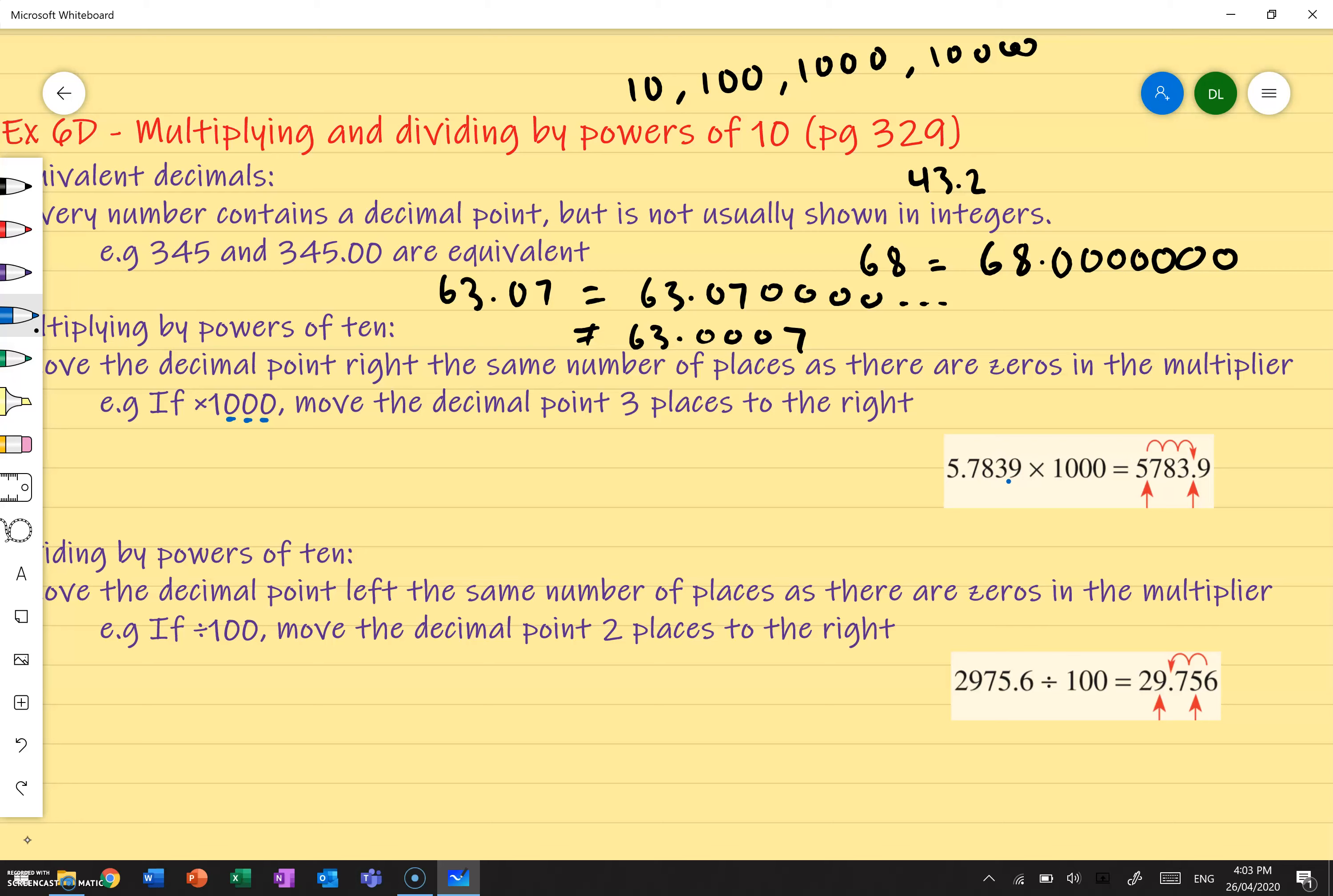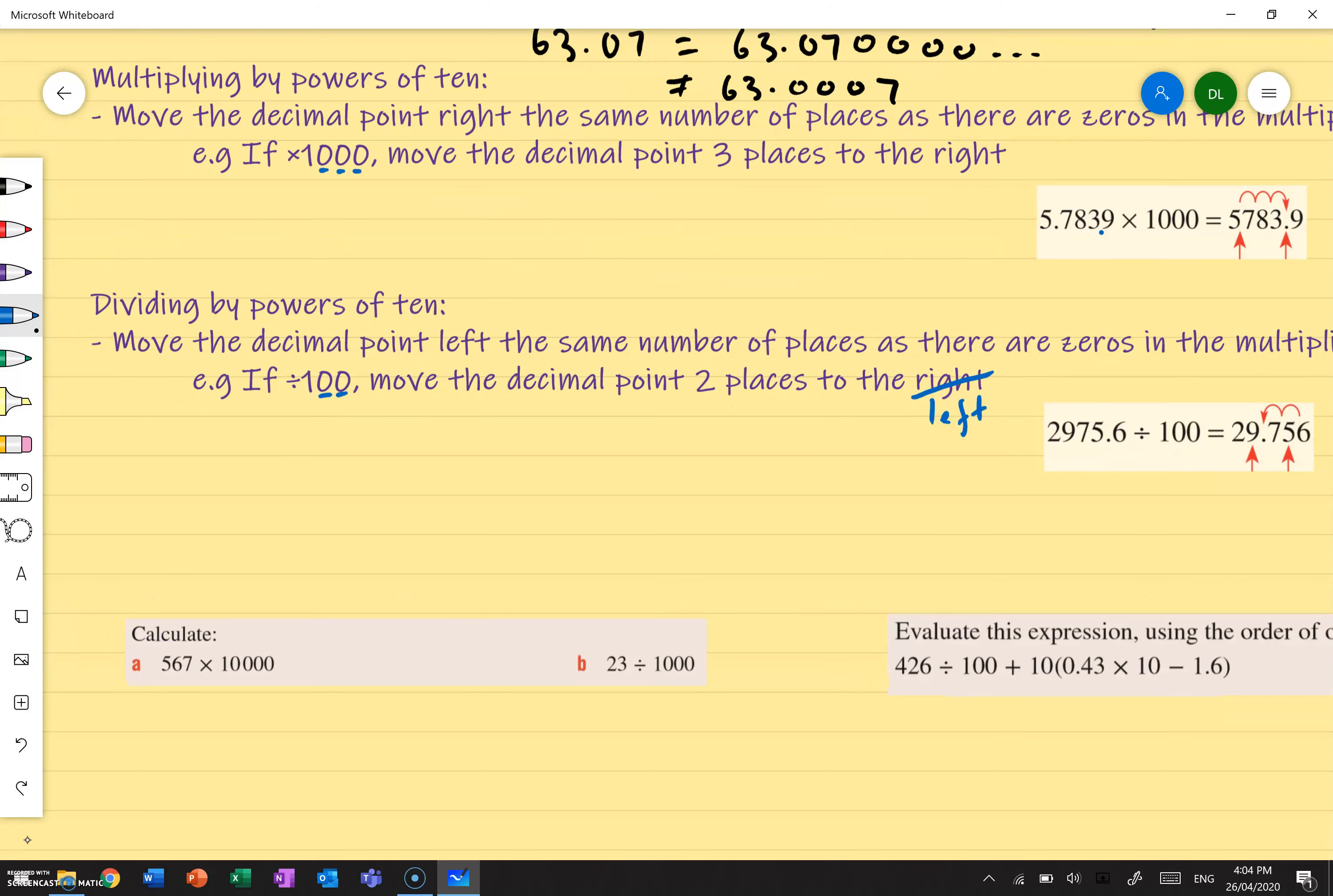If I'm dividing by powers of 10, I do the same thing, except I move left. So if I divide by 100, there's two zeros there. So I move the decimal point two places to the left. So in this case, I've got 2975.6, decimal point's right here. One, two, it should be between the 29 and the 75, between the nine and the seven. And that's how we multiply and divide by powers of 10. Pretty straightforward. Let's go ahead and do an example.